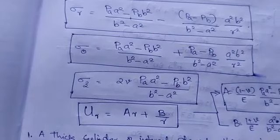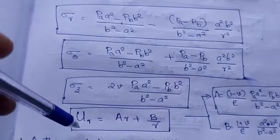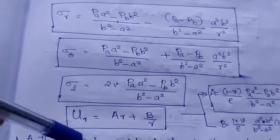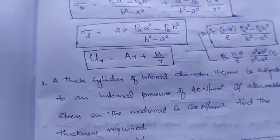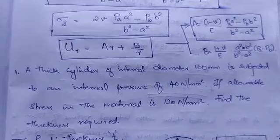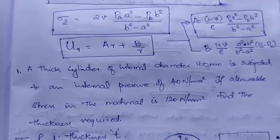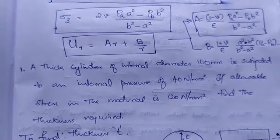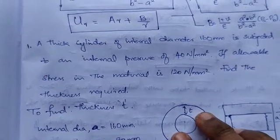u_r is the displacement — it can be along a or b, meaning along the inlet radius or outlet radius. I'll explain it when doing the problem. Our first question: a thick cylinder of internal diameter 160 mm is subjected to an internal pressure of 40 N/mm². The allowable stress in the material is 120 N/mm². Find the thickness required.